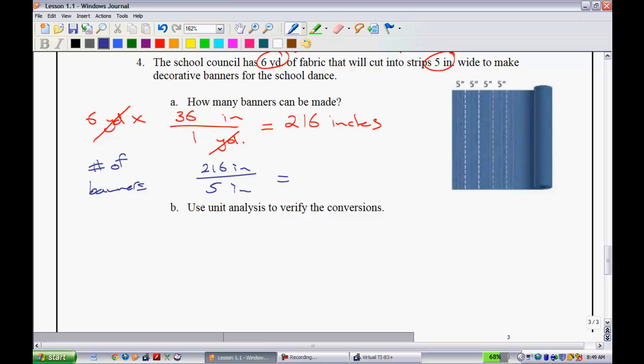5 goes into 240 times, and 5 would go into 16 three times. That would be 43 with one remainder, which gives you 0.2. So 43.2 banners we could make. Well, again, if you think in realistic terms, that really means you're not going to make 0.2 of a banner. So I would say that your correct answer for this would be 43.